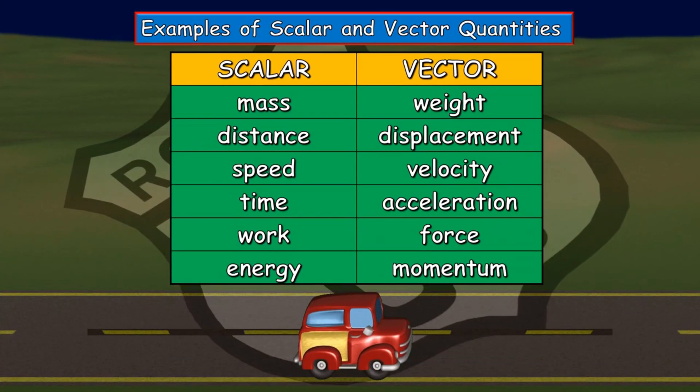Here are some of the scalar and vector quantities based from the fundamental and derived quantities. For scalar, we have mass, distance, speed, time, work, and energy. While for vector quantities, we have weight, displacement, velocity, acceleration, force, and momentum.